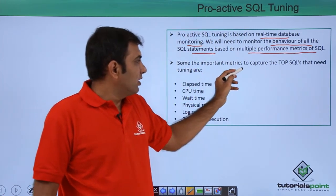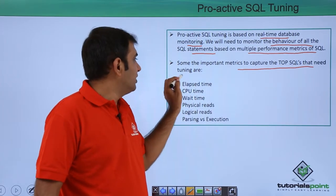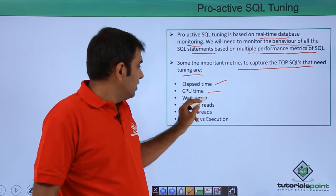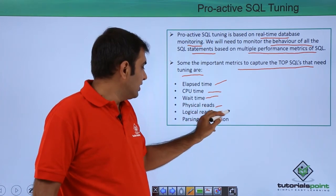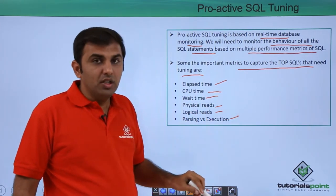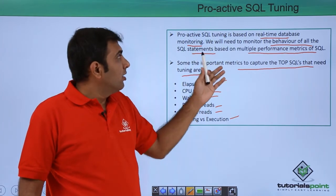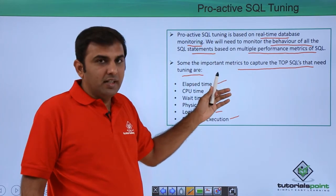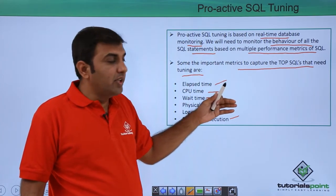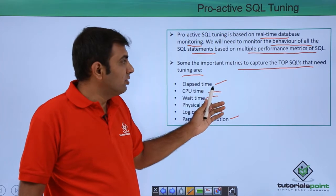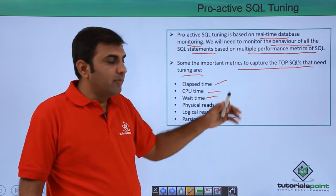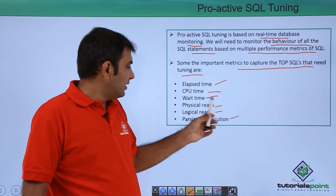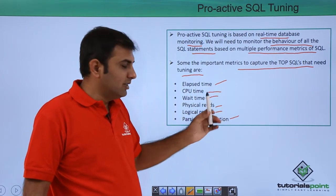Some important metrics to capture the top SQL statements that need tuning are: elapsed time, CPU time, wait time, physical read, logical read, and parsing versus execution. Whenever you are doing proactive SQL Tuning — that is real-time, whenever the database is running and applications are going on — these are the factors you need to keep in mind to find out the top SQL statements.